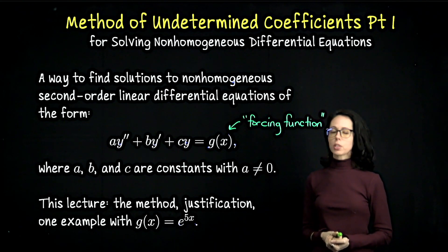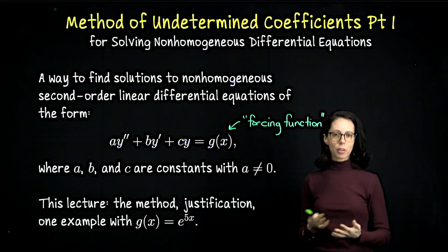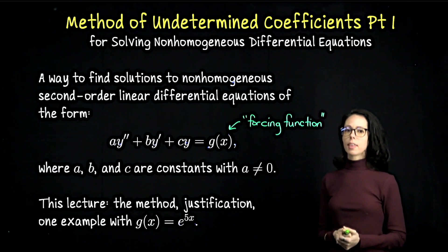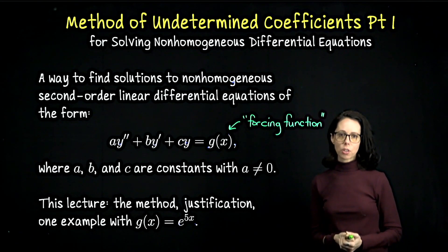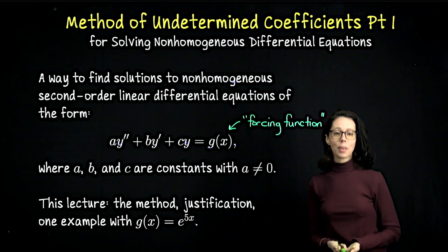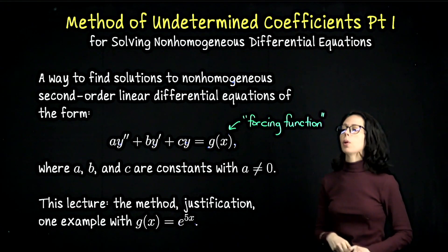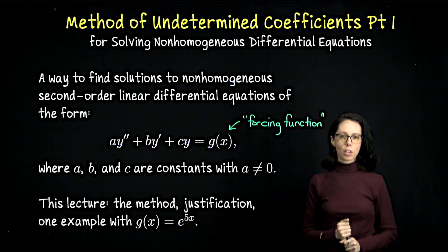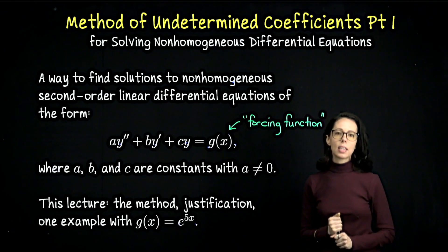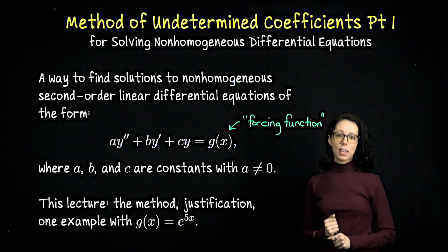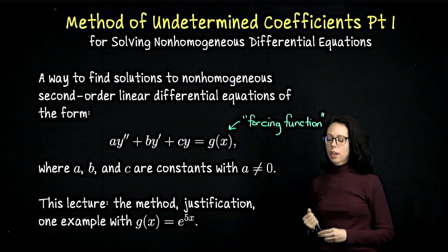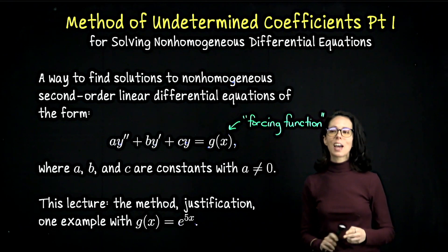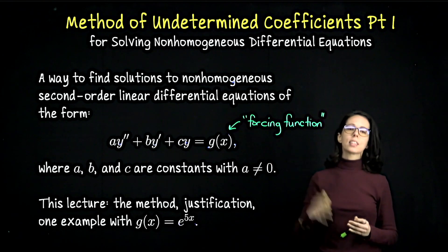In this video, we're going to talk through the method. I'll lay out a step-by-step procedure, briefly justify that the form of the general solution we write down is correct, and conclude with one example where the right-hand side is an exponential function — g of x equals e to the 5x. In the next few videos, we will look at a constant right-hand side, a polynomial right-hand side, and sines and cosines.